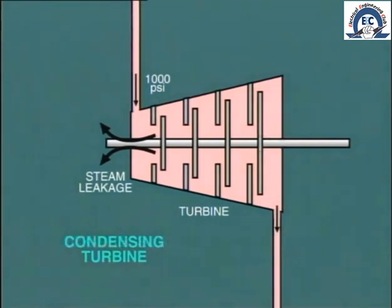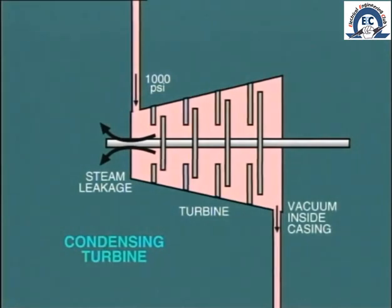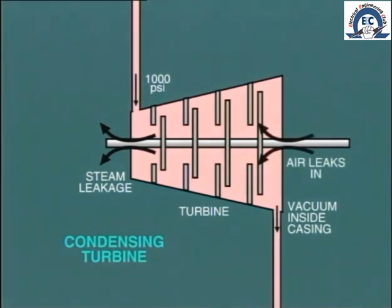But what about the case of a condensing turbine? In this situation, there is a vacuum inside the casing at the low-pressure end. So instead of steam leaking out, air would leak in and we do not like that either. It could lead to a loss of vacuum and a consequent loss of efficiency.